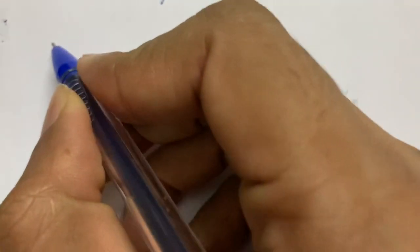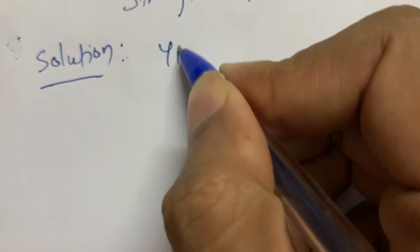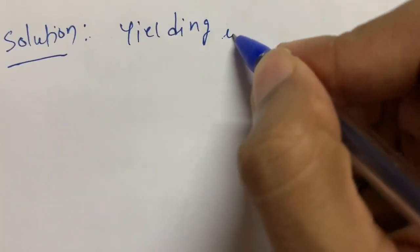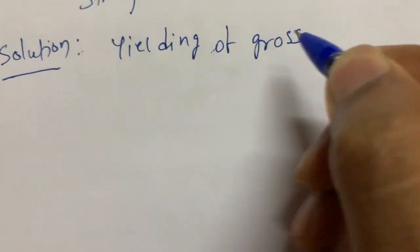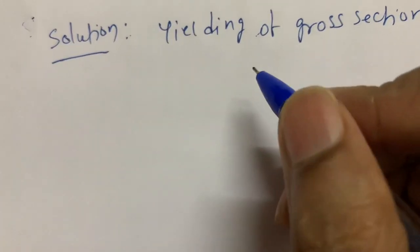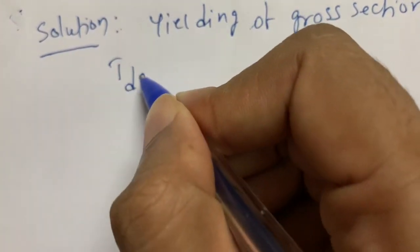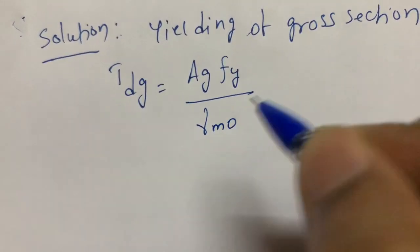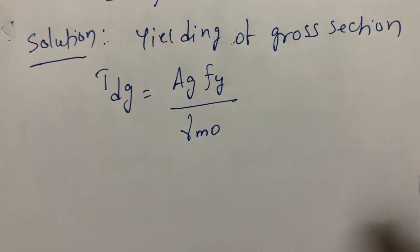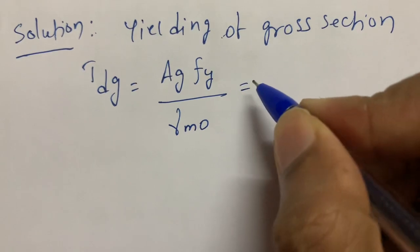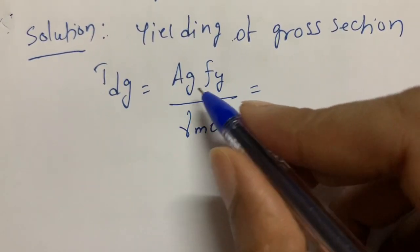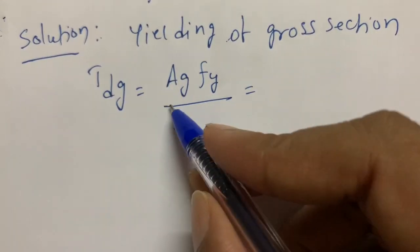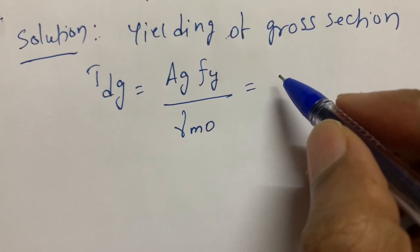The first failure mode is yielding of gross section. The code specifies the formula on page 32, Section 6 (Design of Tension Members): Tdg = Ag·fy / γm0. Here Ag is the area of the gross section.